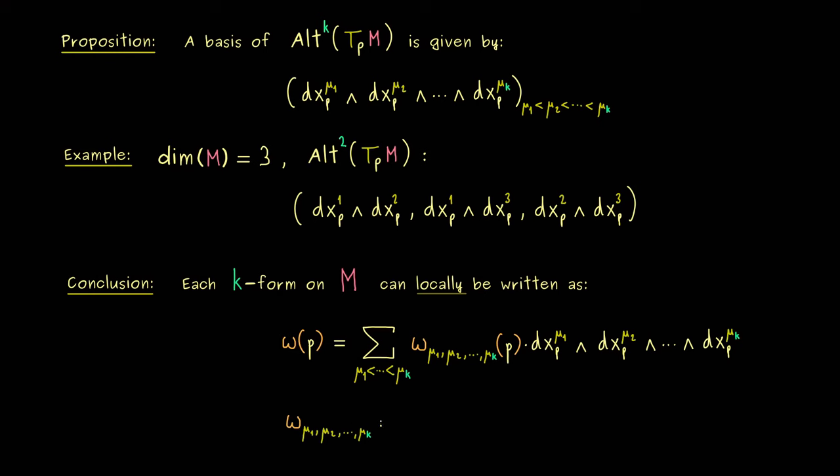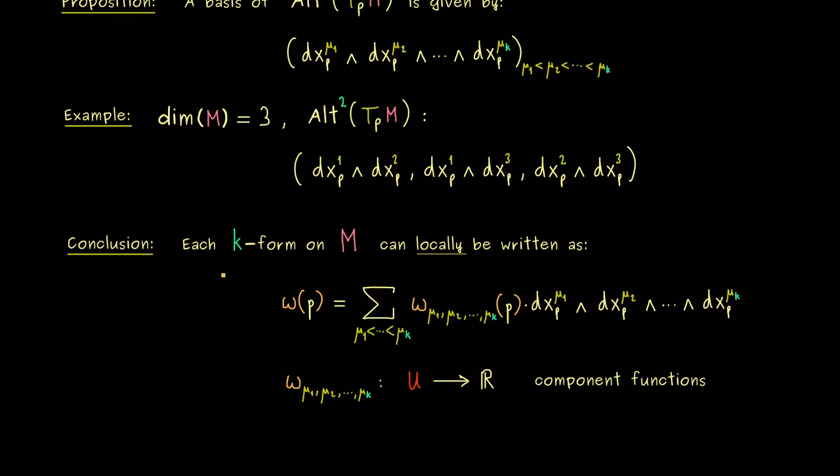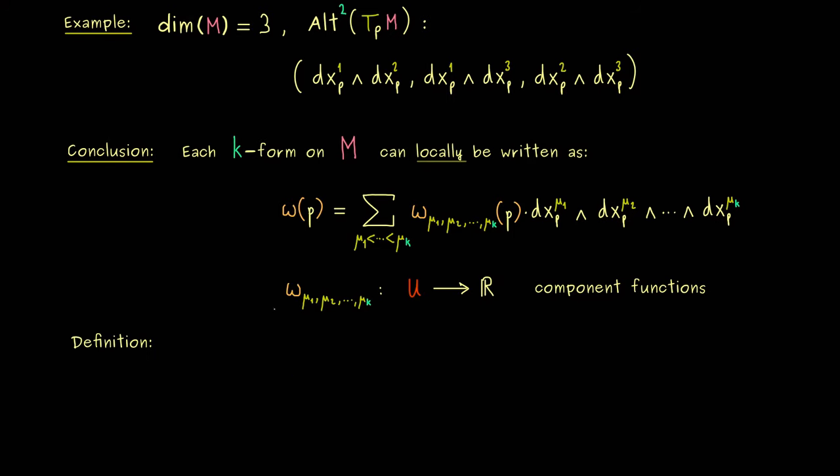Hence, in summary, we see, this is the local description of the k-form on M. And exactly this we can finally use to make the definition of a differential form. Now, the first thing is very quick. If all the component functions here are differentiable at the point p, then we simply say that the k-form on M, omega, is differentiable at p. So you see, this is a new notion. Now, a k-form on M can be also differentiable. Moreover, by the definition of a smooth manifold, as always, you should see, it does not matter which chart we choose here. More precisely, if we have this differentiability for one chart around p, we have it for any chart around p.